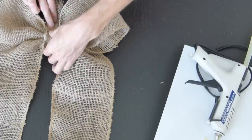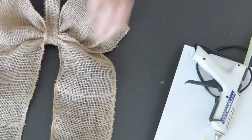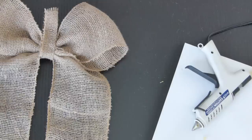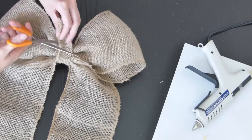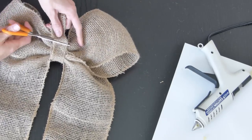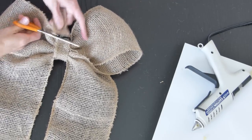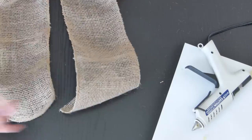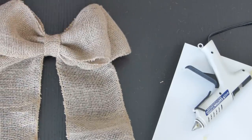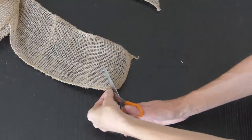So we'll just grab the scissors and trim off that excess piece right there like you see me doing. There you have it, that's what the bow looks like. Now we'll give it a little character at the end.